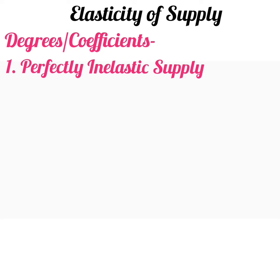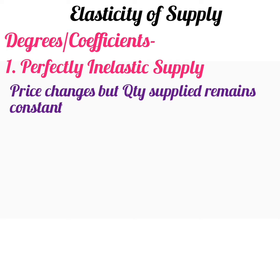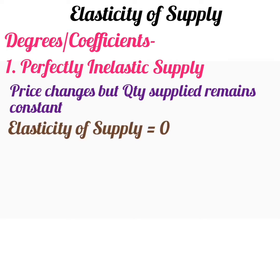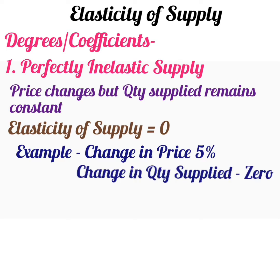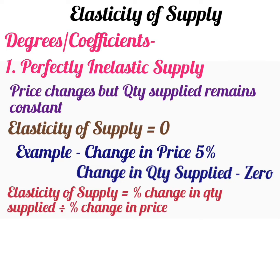First, perfectly inelastic supply. If there is no response in the quantity supplied to the change in price of the commodity, then the elasticity of supply is said to be perfectly inelastic. It is a situation where price changes but the quantity supplied remains constant. Hence, the elasticity of supply is equal to 0. For example, if the price of commodity X changes by 5% and the change in quantity supplied is 0, then elasticity of supply = 0 divided by 5 = 0. So the value of elasticity of supply in case of perfectly inelastic supply is 0.